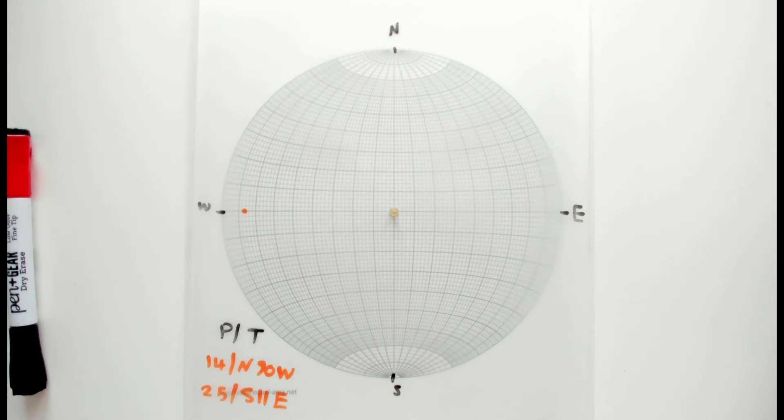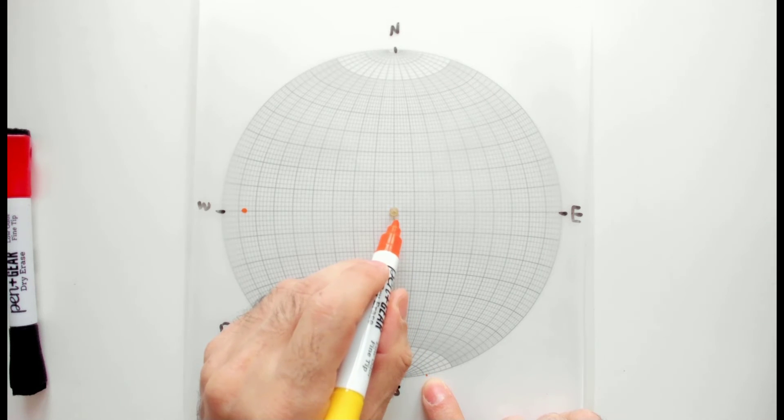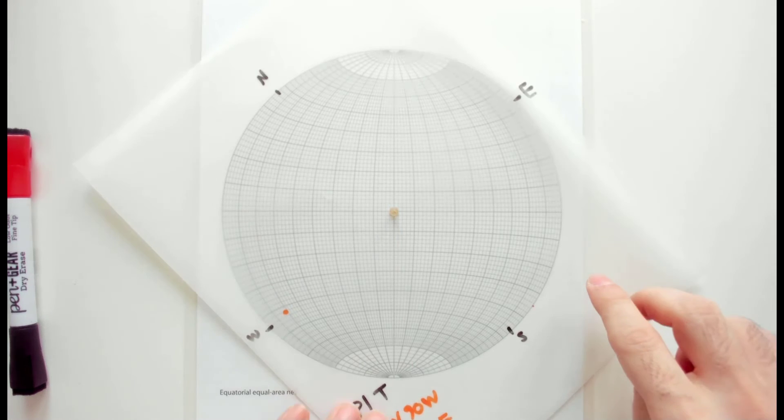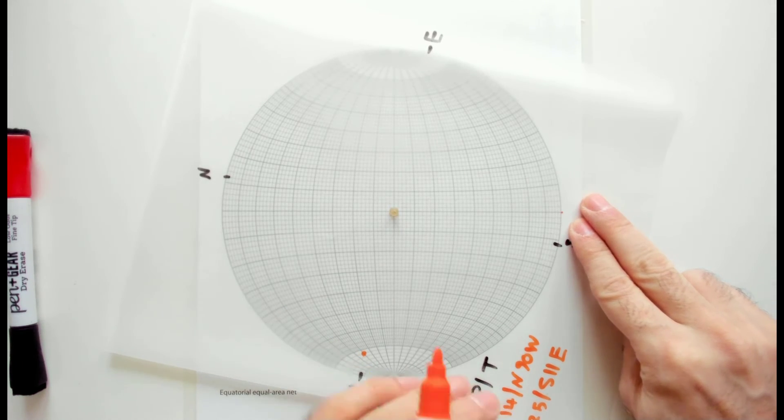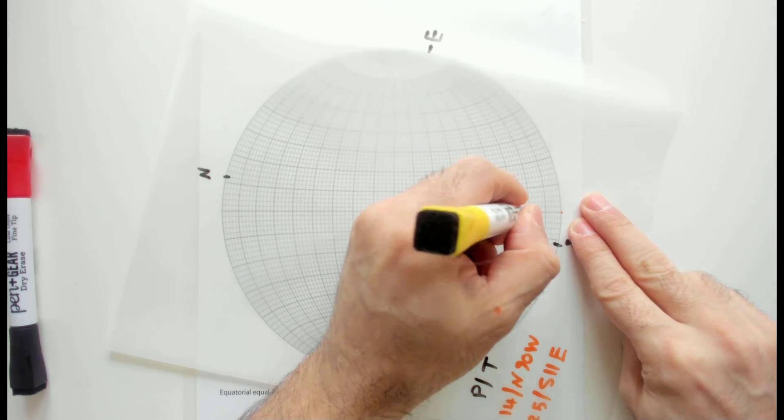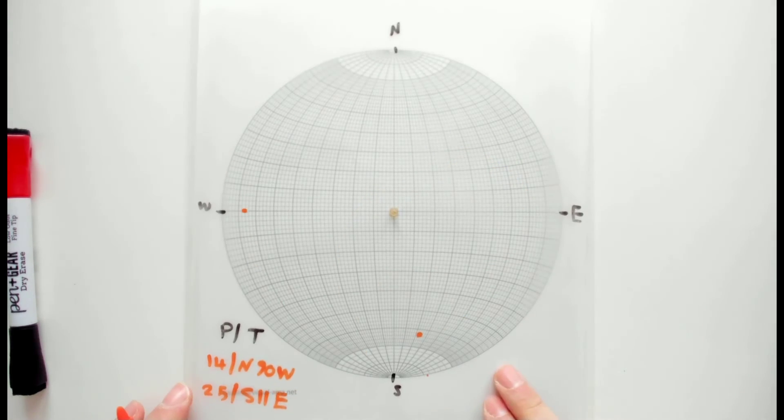Next one is south 11 east. From south, you go 11 degrees towards east—this is the trend—and I need to go 25 degrees towards the center. For doing that, I'm going to place this one along the west-east line and then count 25 degrees and put the dot there. This is the second one.